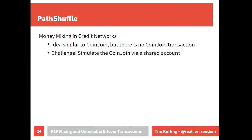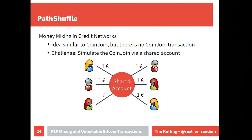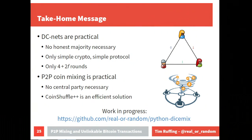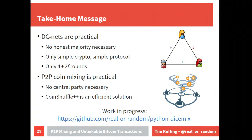Another application is PathShuffle, which applies money mixing not in cryptocurrencies but in credit networks — see the next talk by Pedro for details. The take-home message is: DiceMix units are practical, requiring no honest majority, only simple cryptography, and completing in 4 + 2f rounds for f malicious parties. Peer-to-peer coin mixing is practical using DiceMix, you don't need a central party, and CoinShuffle++ is an efficient solution.